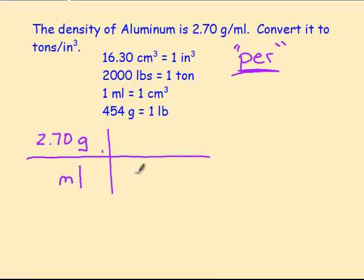So now when we convert grams, we're going to put grams down on the bottom to cancel it, and when we get rid of milliliters, we're going to put it on the top to cancel it.